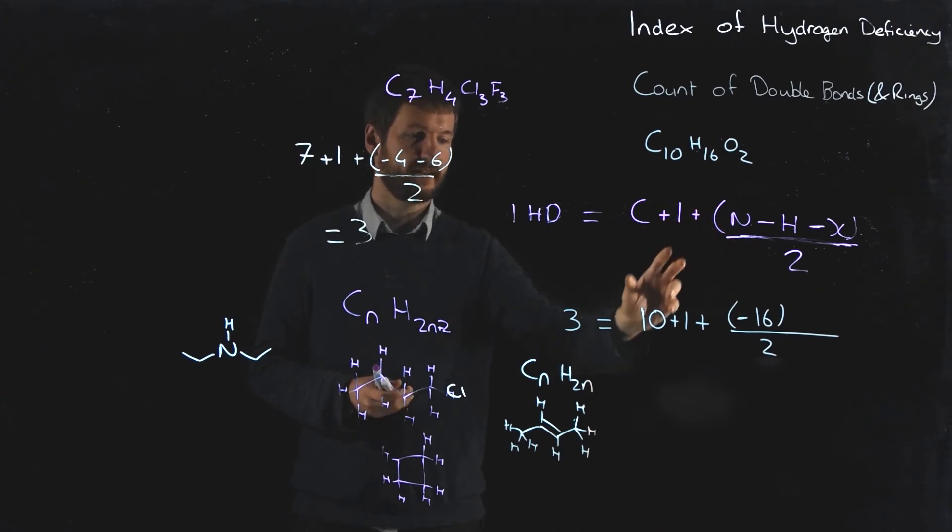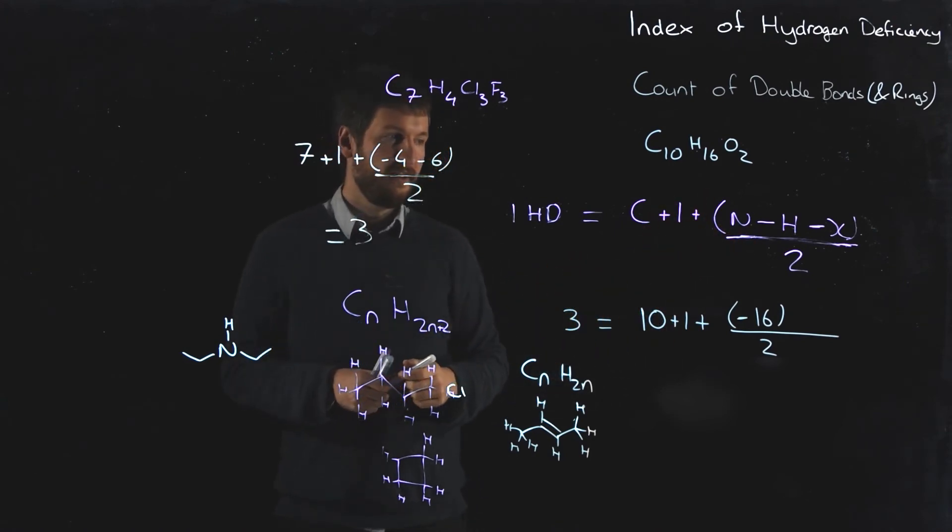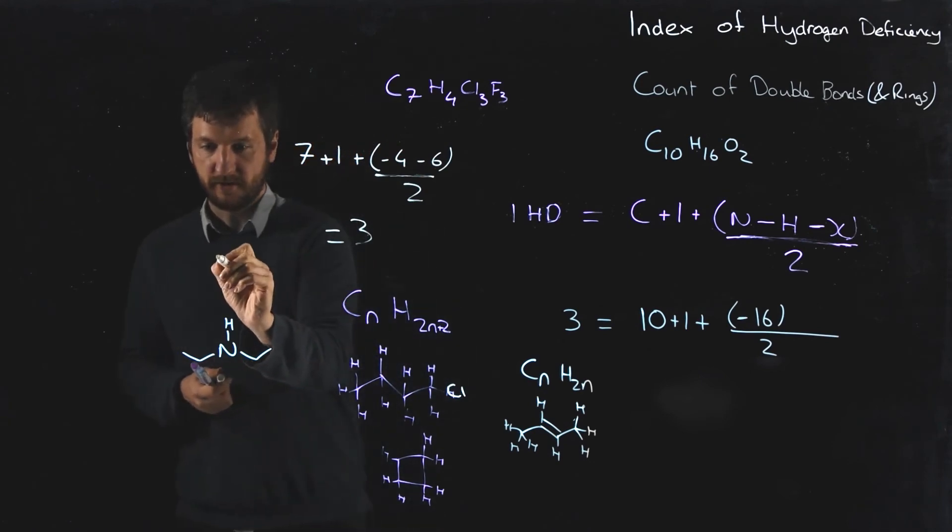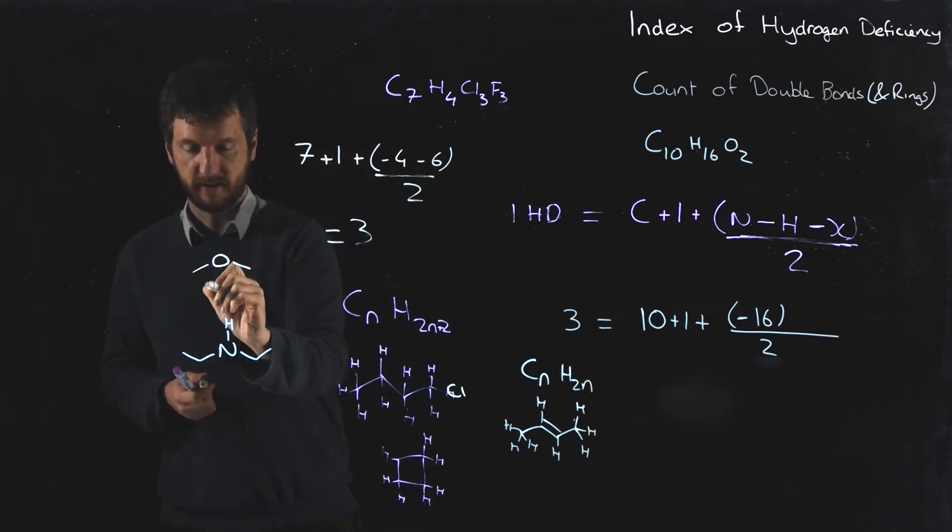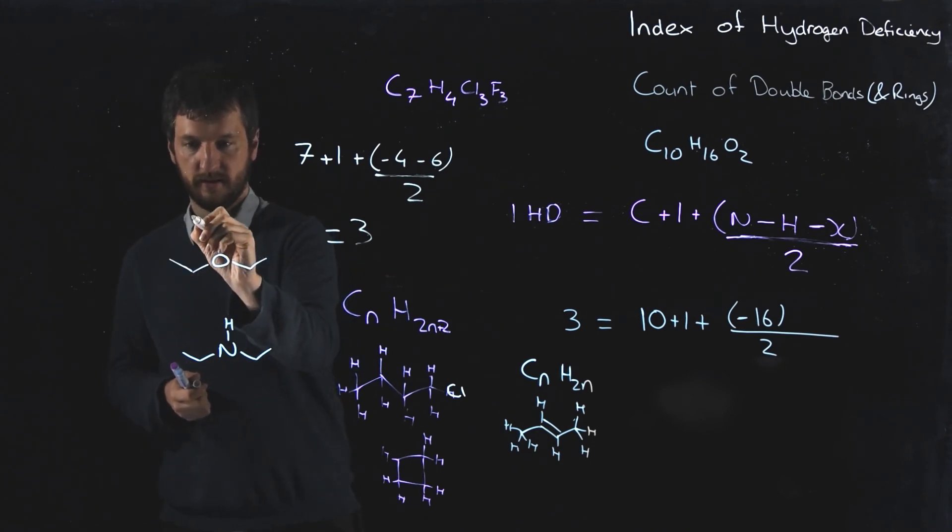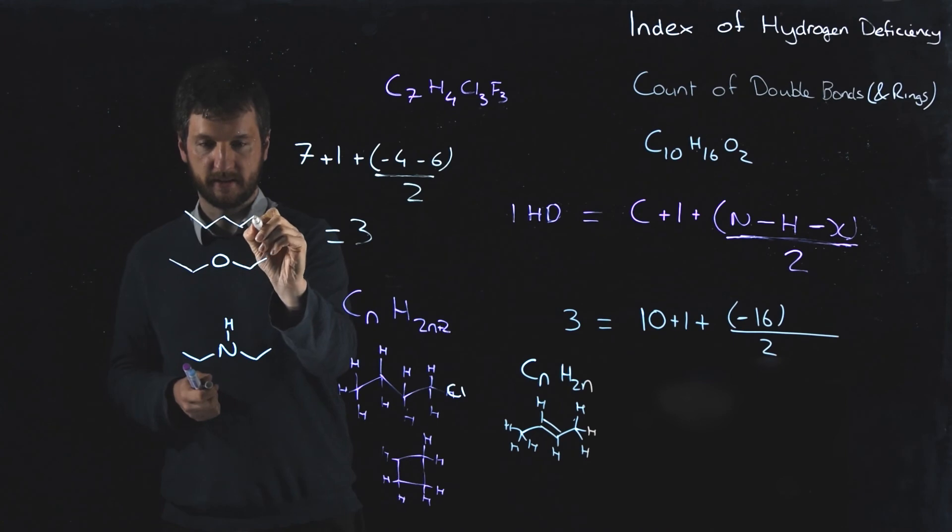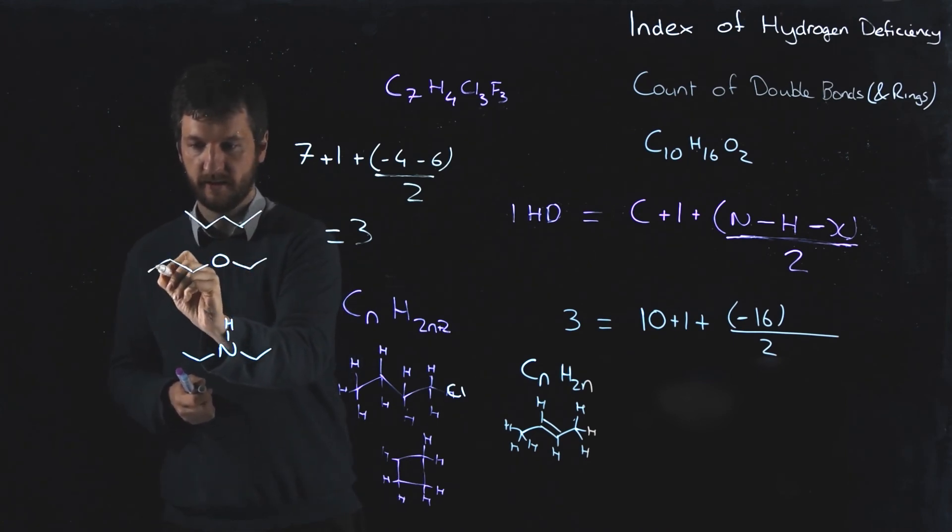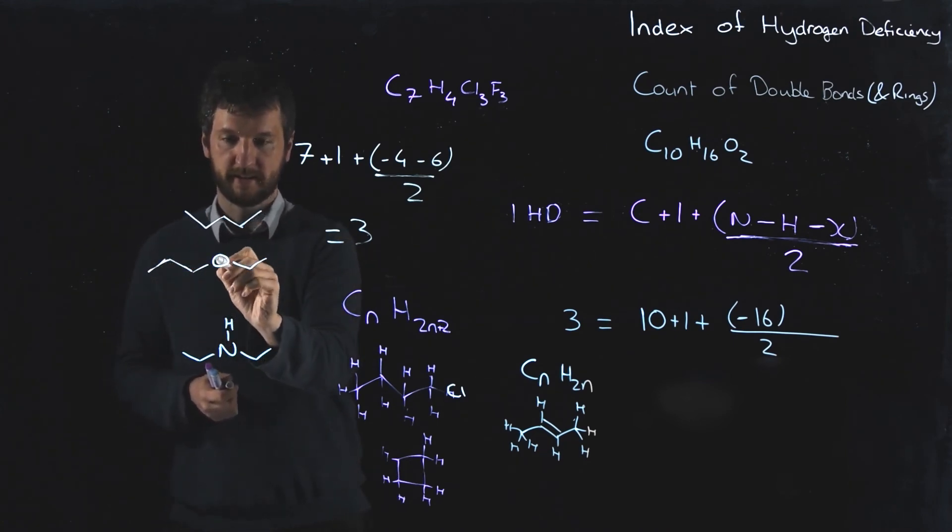Finally then, oxygen. Well, oxygen we know is divalent - you attach something to either side. So whether or not there's an oxygen in this molecule isn't going to affect... we'll add one more on there. So here is propyl ethyl ether and here is pentane.